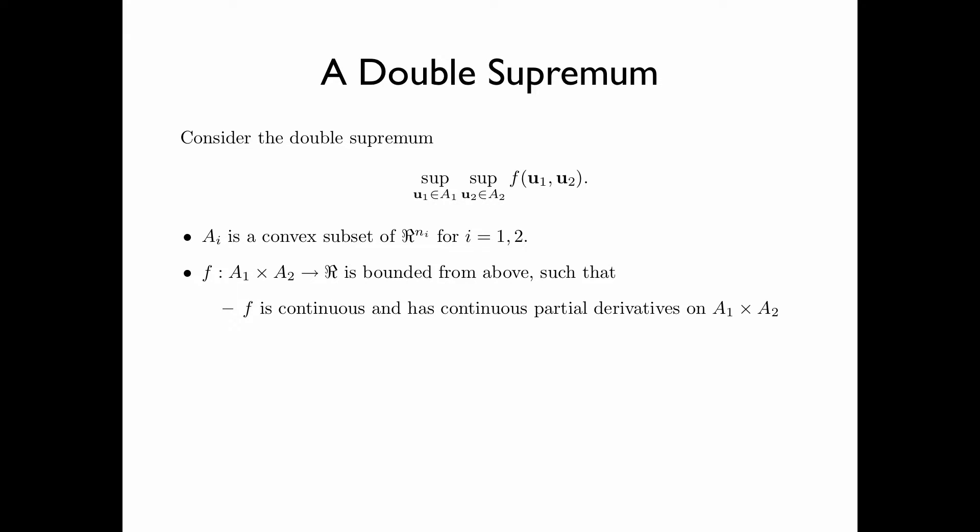f, a function from A_1 times A_2 to R, is bounded from above, such that f is continuous and has continuous partial derivatives on A_1 times A_2.